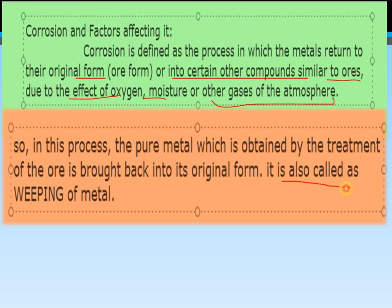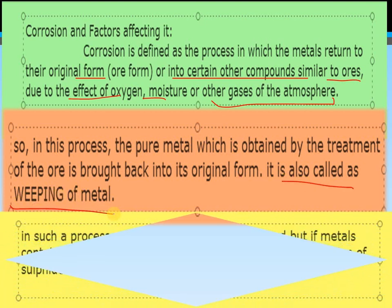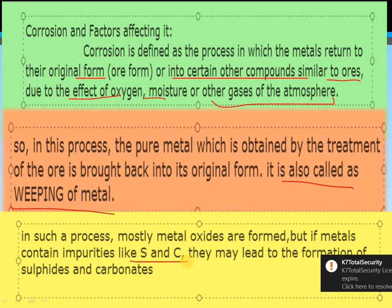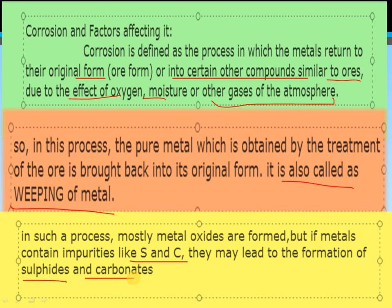Corrosion is also known as the weakening of the metal. In such a process, mostly metal oxides are formed. But if the metal contains impurities like sulfur and carbon, then metal sulfides and metal carbonates are formed. This is the process of corrosion basically.